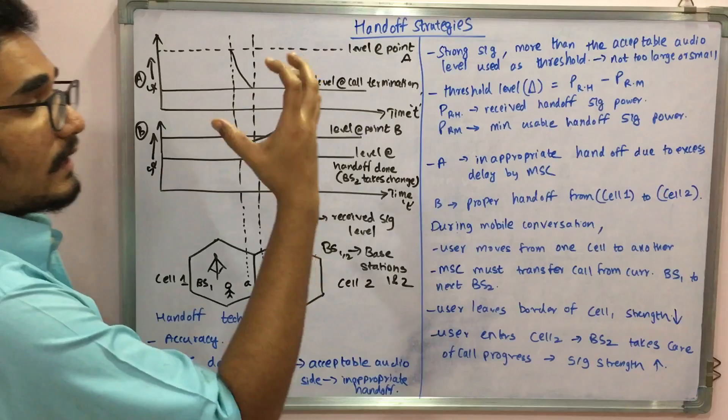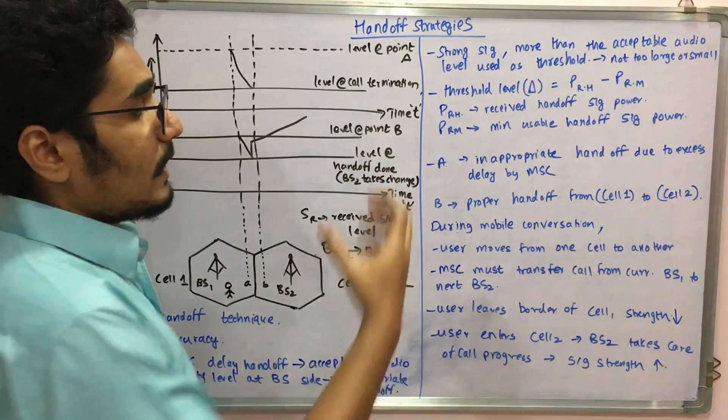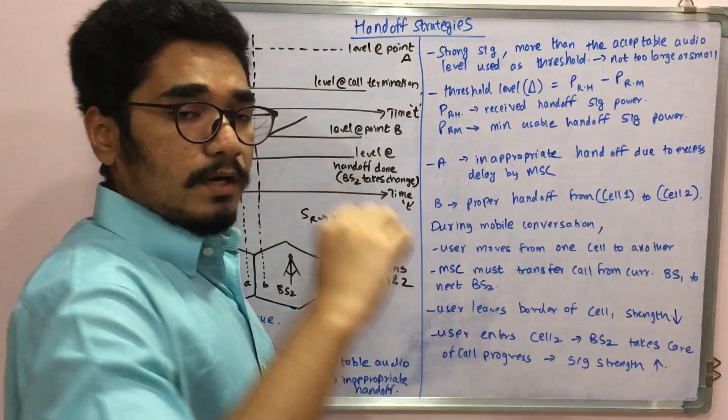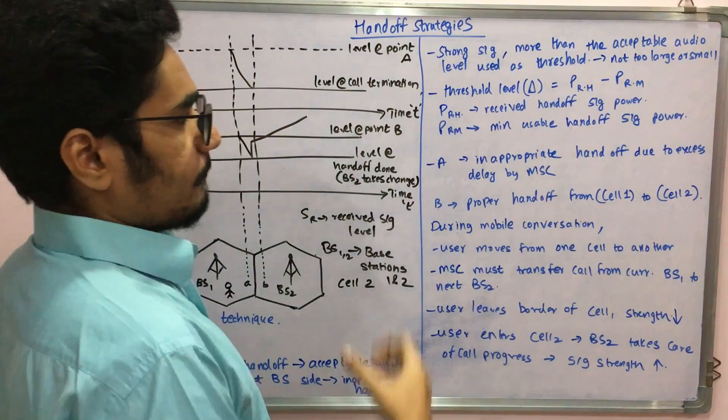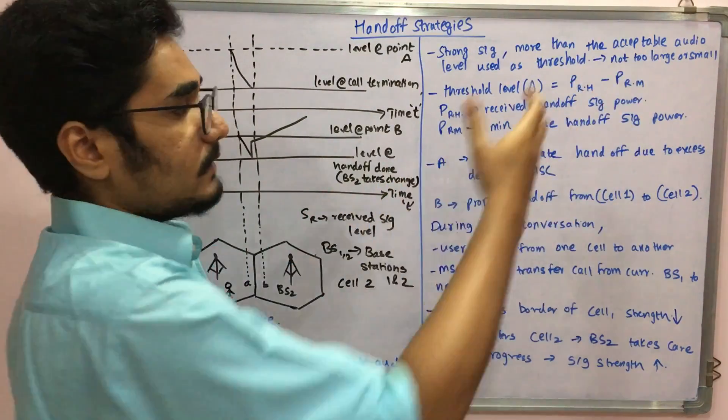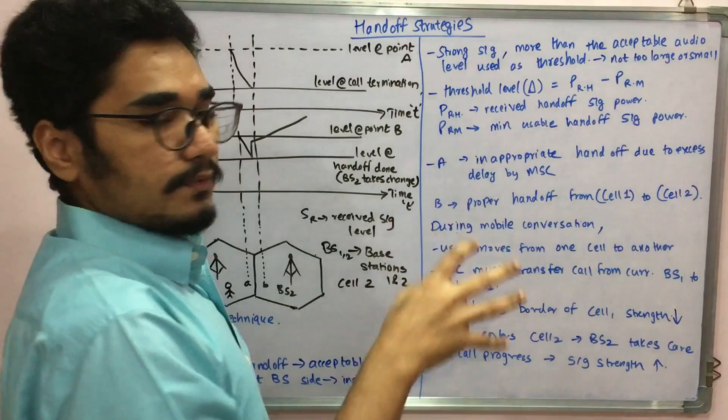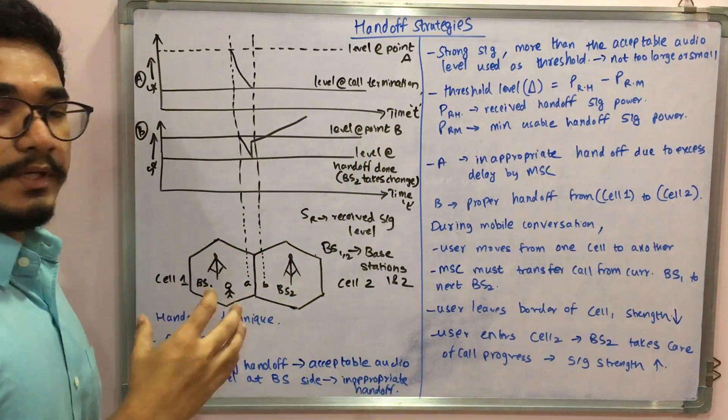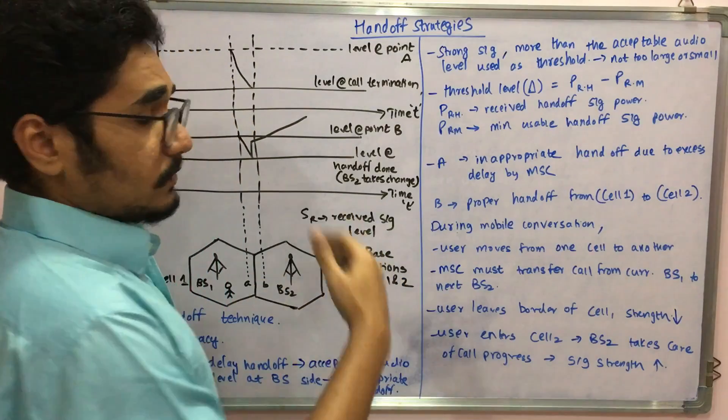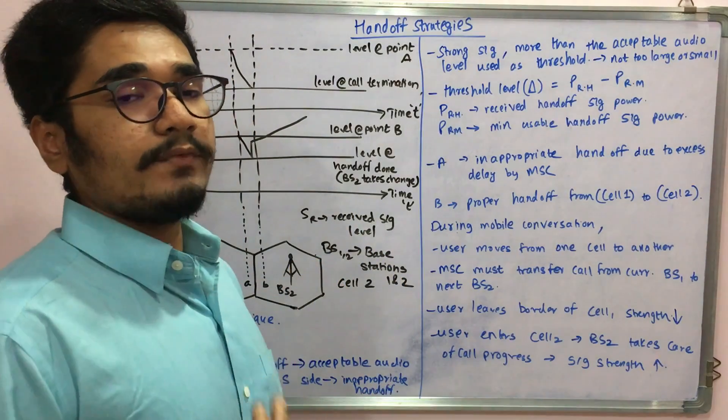PRH is the received handoff signal power and PRM here is the minimum usable signal power from that received signal power. This equation gives you the threshold level where you need to place your call so that you can estimate how and when the call is made.